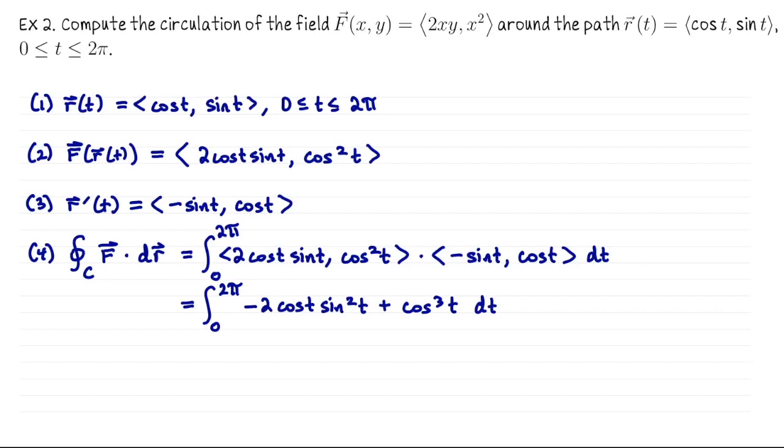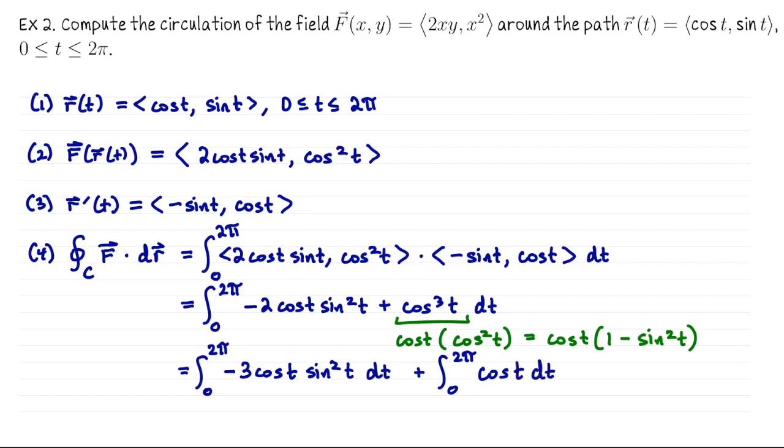Let me take cos³(t) and write that as cos(t)·cos²(t), and then I can replace cos²(t) with 1 - sin²(t). So there I will pick up another -1·cos(t)·sin²(t). So I'm going to write this integral now as the integral from 0 to 2π of -3cos(t)sin²(t), and then I'll break off into a separate integral just the integral from 0 to 2π of cos(t).